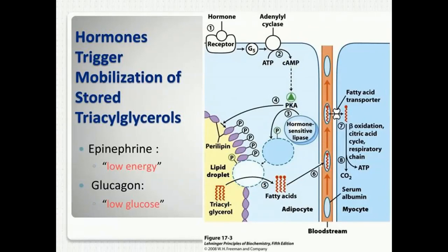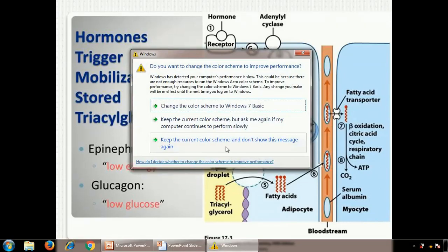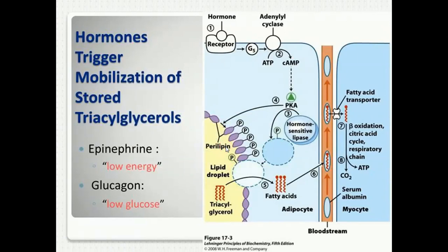Hormonal triggers mobilize stored triacylglycerides. In case of low glucose level or low energy state, hormones bind on receptors placed on adipocytes, activating stimulatory proteins that initiate adenylate cyclase to increase cyclic AMP. This phosphorylates protein kinase A. Protein kinase A phosphorylates the perilipin layer on one side, and on the other side hormone-sensitive lipase changes its conformation to make it accessible with lipid droplets, allowing triacylglyceride to be released from storage into the bloodstream, where it attaches with albumin and is transported to target cells.